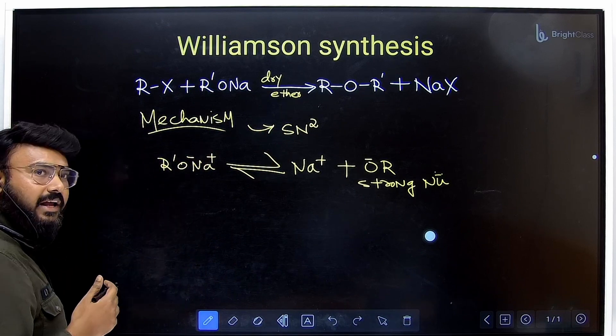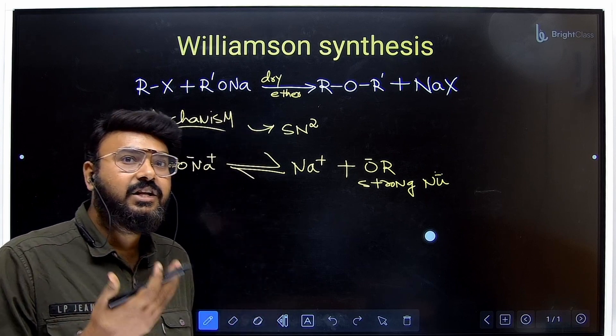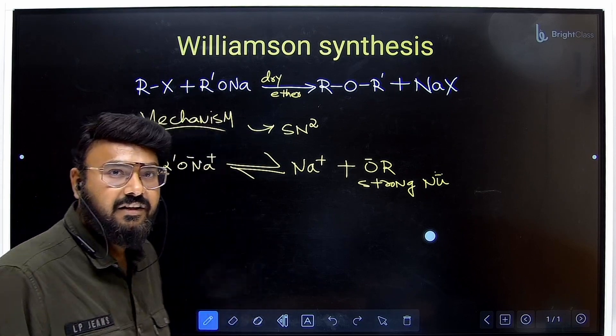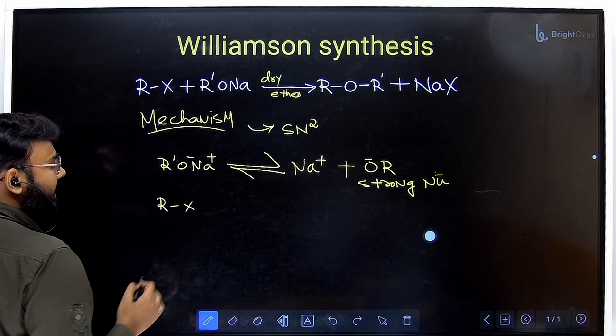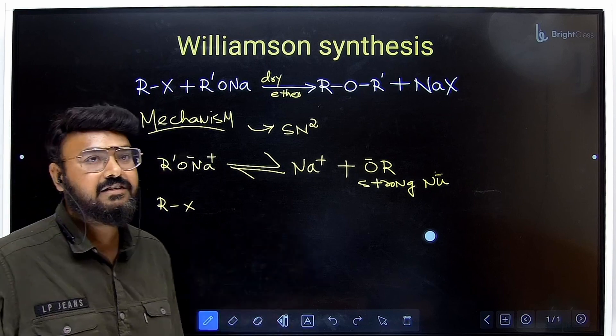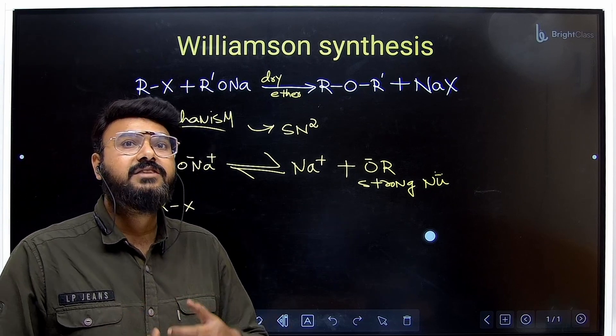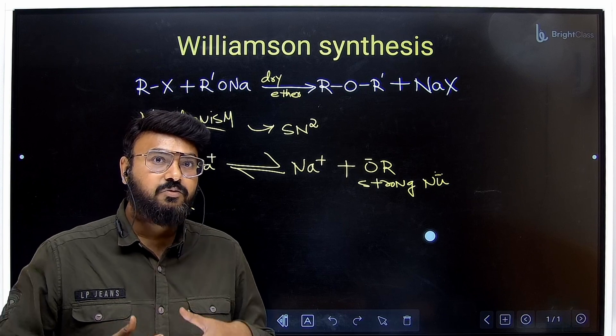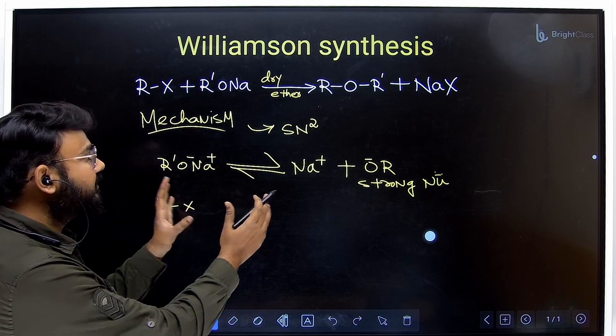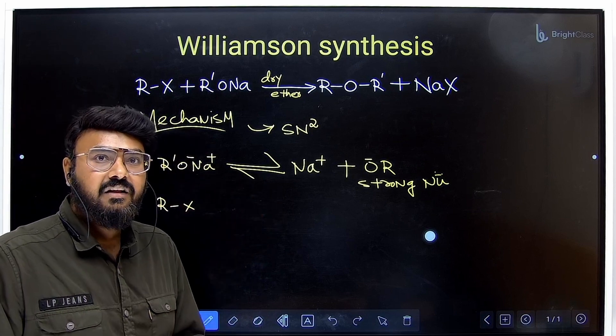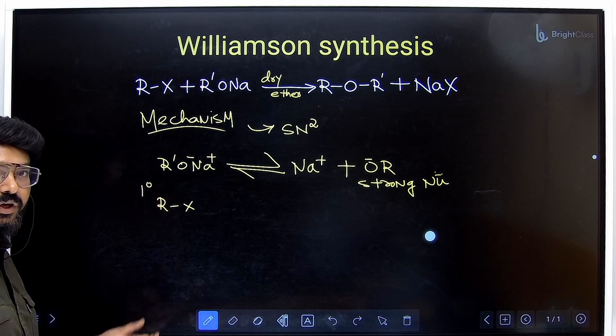And remember, SN2 reaction attack can be possible only from the inversion side. It is a single step reaction. So first of all we will take the alkyl halide. And remember, in SN2 reaction the rate of reaction is inversely proportional to the steric hindrance. Steric hindrance means bulkiness. If there is more bulkiness, the rate of reaction will be slow.